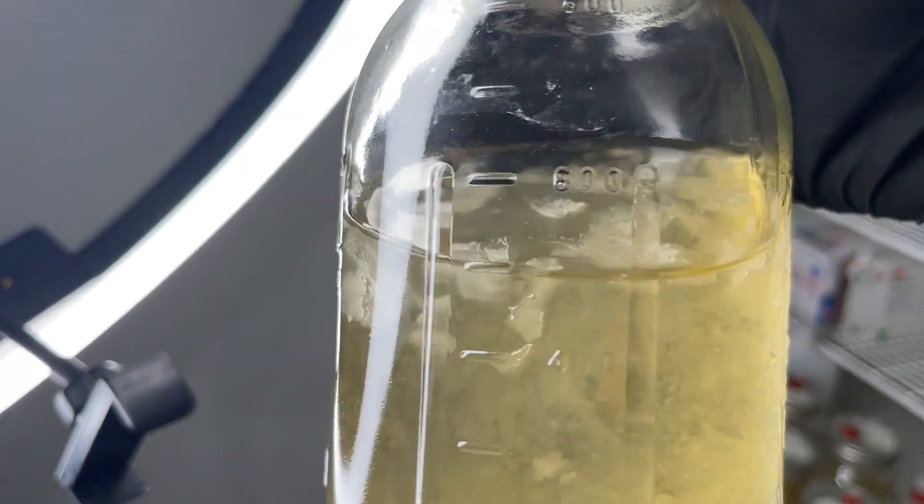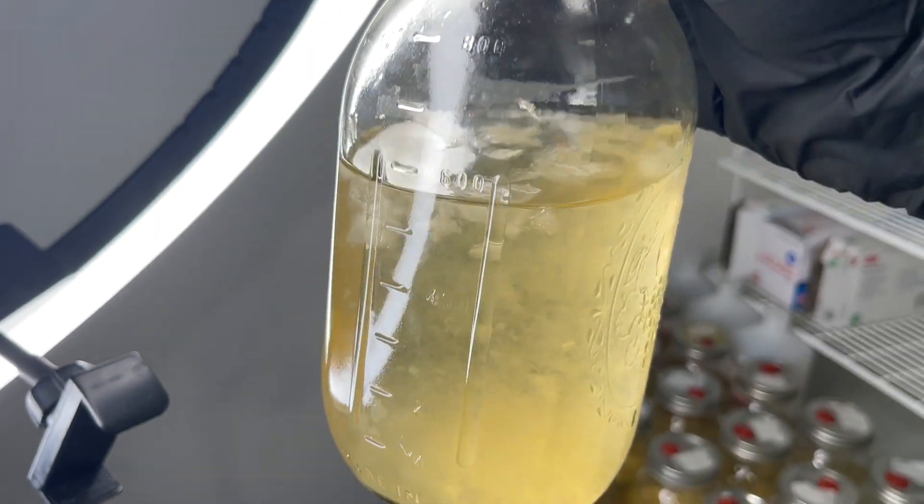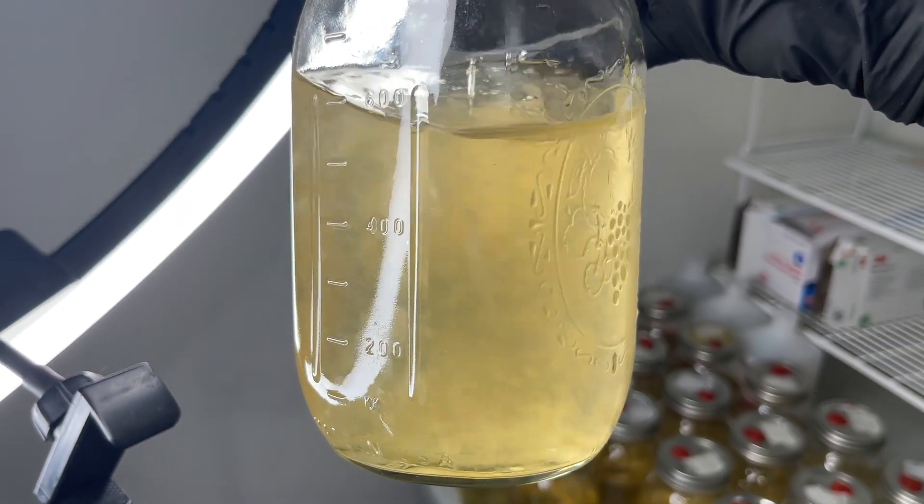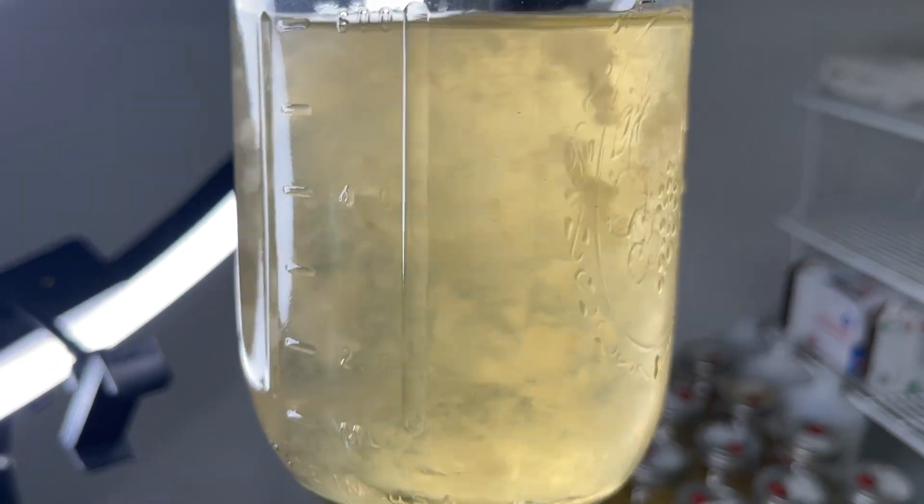This liquid culture is king oyster, which is very aggressive and can grow on the surface if you don't stir it. The mycelium will always be a normal white color.